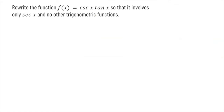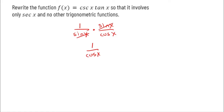In this problem, we're asked to rewrite the function f(x) = cosecant x times tangent of x so that it involves only secant of x. I'm going to first rewrite cosecant to 1 over sine of x — that's a reciprocal identity — times tangent rewritten using the quotient identity as sine of x over cosine of x. The sine of x's cancel to 1, giving me 1 over cosine of x, which by reciprocal identity is secant of x.